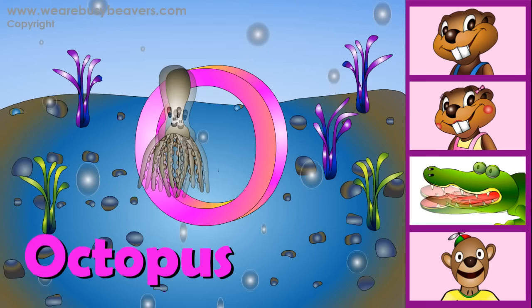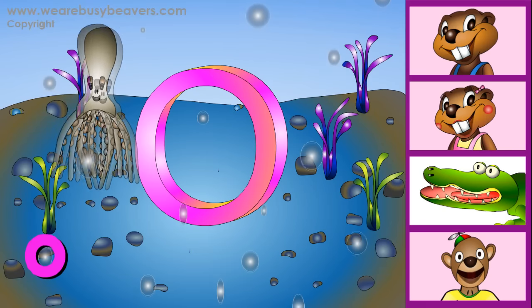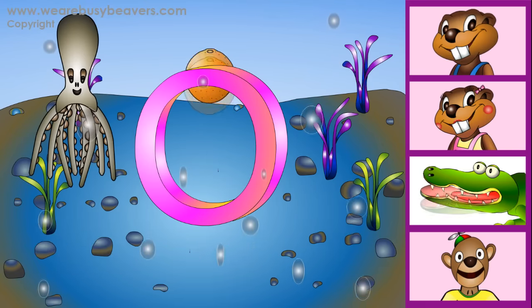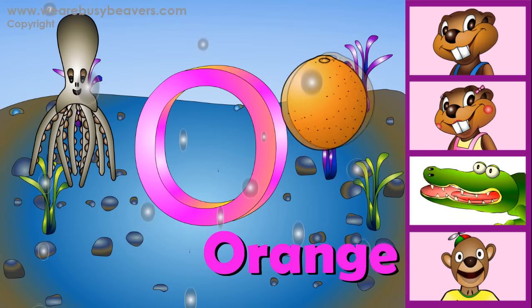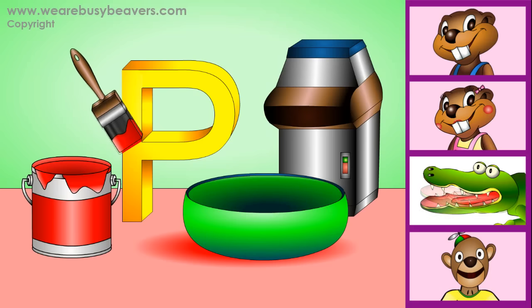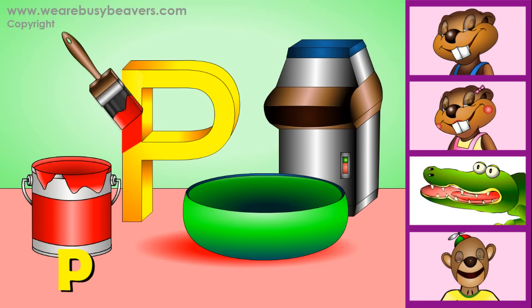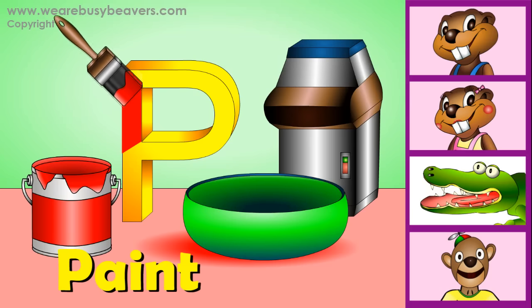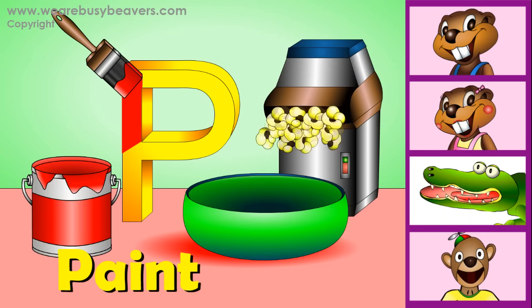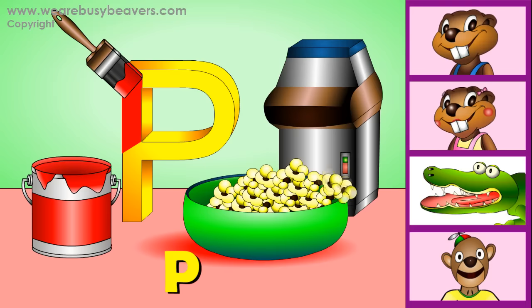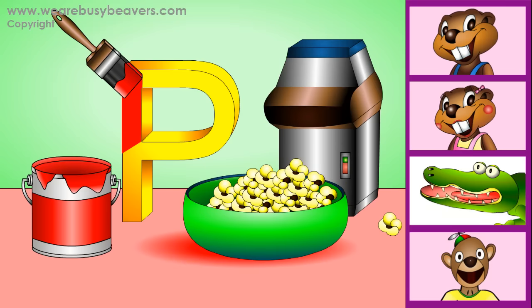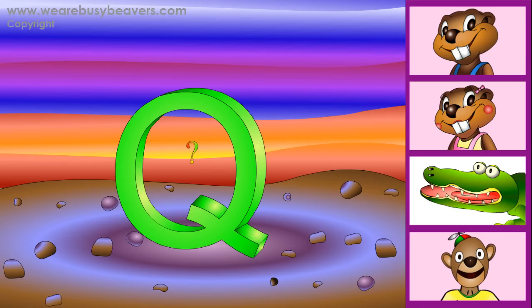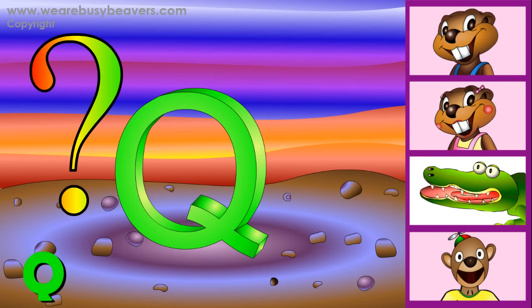It's a n-n-nail. It's a n-n-no. It's an o-o-octopus. It's an o-o-orange. It's a p-p-popcorn.